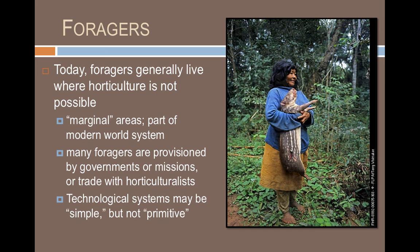Today, hunter-gatherers live in areas where it's basically not possible to farm or do horticulture. In the past, hunter-gatherers lived everywhere, but as our world has gotten smaller through globalization, agriculturalists and ranchers have spread out needing more farmland or grazing land, pushing hunter-gatherers into marginal environments where it's tougher to meet daily needs. As a result, many hunter-gatherer groups today are provisioned with food resources by governments or missionaries, or they engage in active trade with farmers.